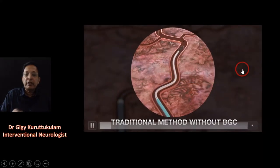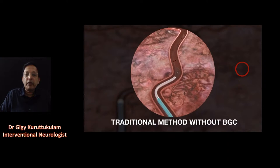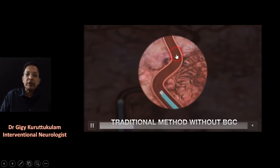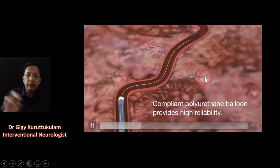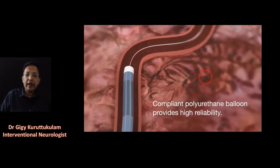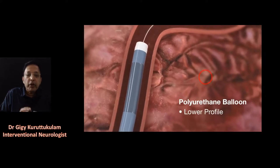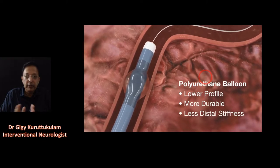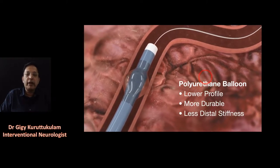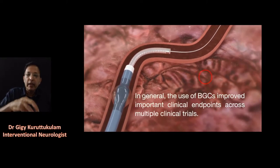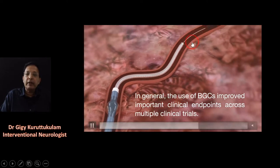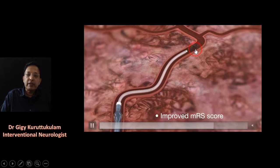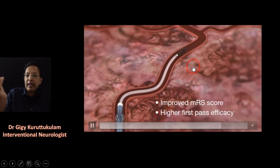This animation shows traditional mechanical thrombectomy without a balloon guide catheter: because of the systemic pressure, the clot can fragment and embolize distally. But when you use a balloon guide catheter, you inflate the balloon and arrest the forward flow of blood in the carotid artery, creating stagnation of blood proximal to the clot.